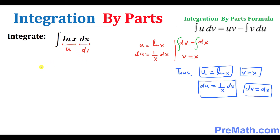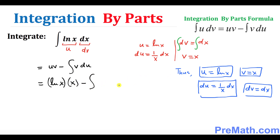So we can write this integral using integration by parts as u·v minus the integral of v·du. Let's fill in the blanks: u is natural log of x, times v which is x, minus v which is x, times du which is 1 over x dx. You can see that the x's cancel each other out, so we get simply x·natural log of x minus the integral of dx.